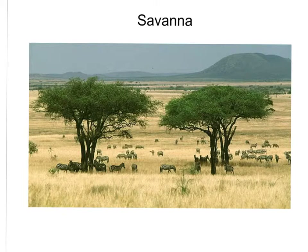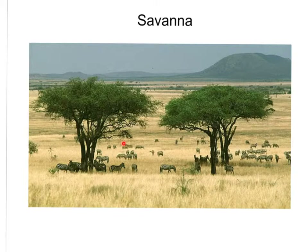The savanna is home to some of the world's largest herbivores — giraffes, elephants, rhinoceroses, kangaroos, antelope. Here we have some zebras grazing in the background. Unfortunately, probably because of poaching and human settlement, a lot of these species are experiencing serious population declines.